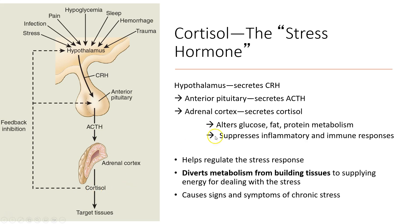The release of cortisol can alter our glucose, fat, and protein metabolism, and it can also suppress immune responses and inflammation. While it regulates the stress response, cortisol will divert our metabolism from building our tissues to supplying an immediate source of energy for dealing with the stress. Because of this, it will increase our blood glucose. It is cortisol that causes the signs and symptoms we often see in someone going through chronic stress.